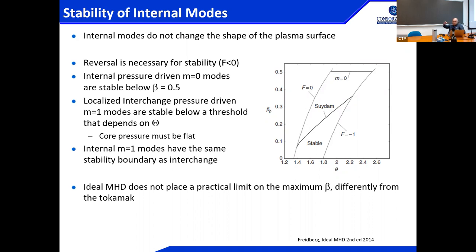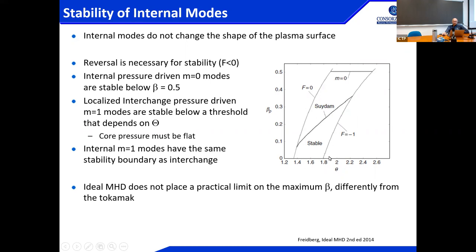Clearly the reversal is necessary. If q has a minimum there are some resistive interchanges, so the F parameter needs to be less than zero — the ratio between the edge field and the flux produced by the plasma. Internal pressure-driven modes are stable below a very high beta. Next are the localized interchange pressure-driven m=1 modes, which are stable below a threshold that is still very high in beta depending on the equilibrium. For a given theta, the F=0 and F=1 lines determine the region in which the RFP typically operates, and the core pressure must be flat for this mode to be stable.